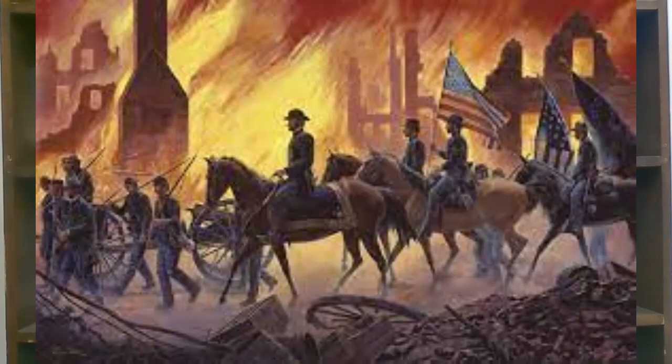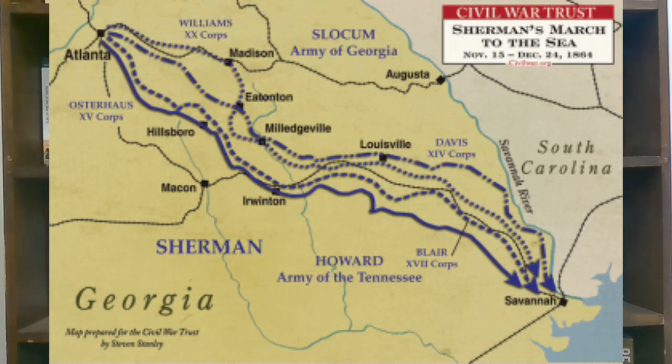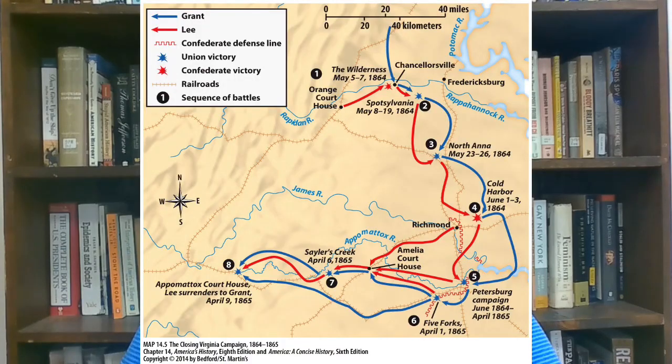The coup de grâce, if you will, was Sherman's March to the Sea — the seizing of Atlanta and Savannah in 1864. On this march, Union forces destroyed Southern infrastructure, Southern supplies, and civilian property. General Sherman brought havoc to the Deep South. General Lee was eventually forced to surrender to Ulysses S. Grant at Appomattox Courthouse in 1865. While the war technically continued for a few weeks, the surrender of the Northern Virginia Army under General Lee essentially marked the end of the Civil War.